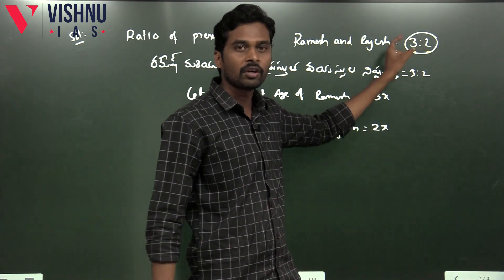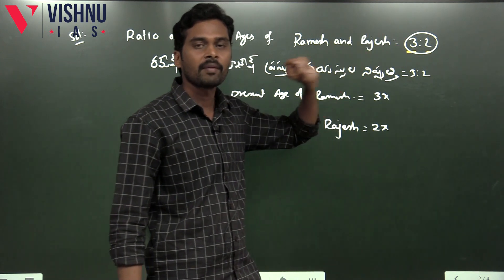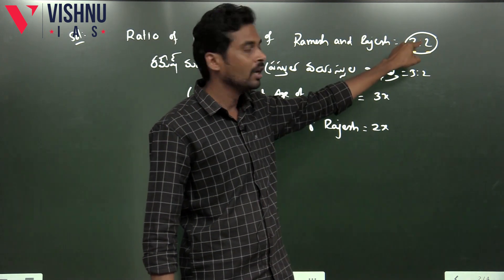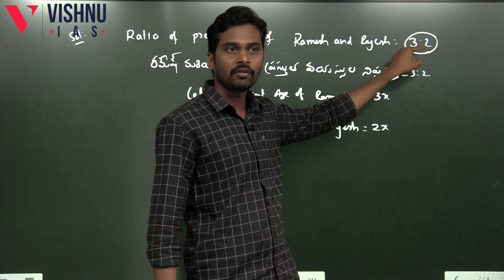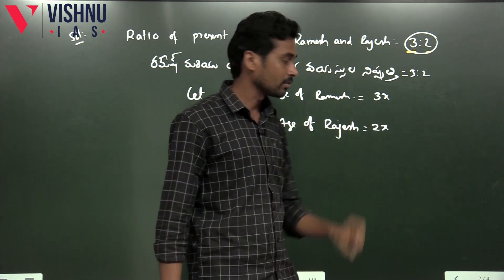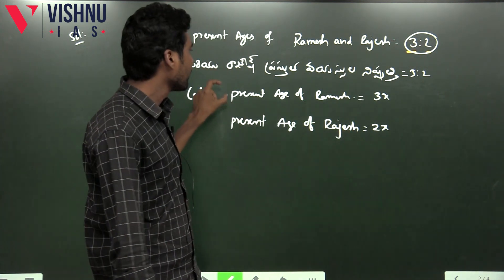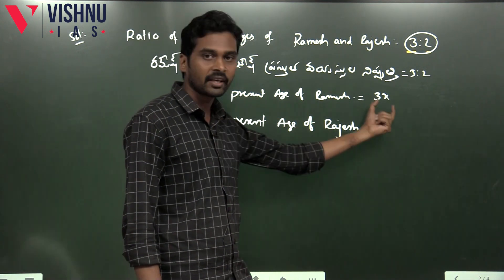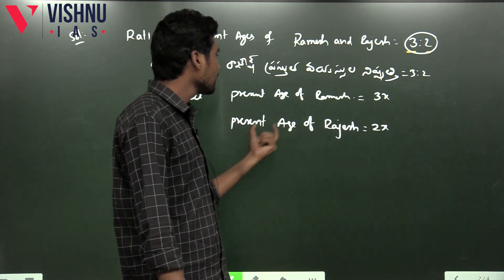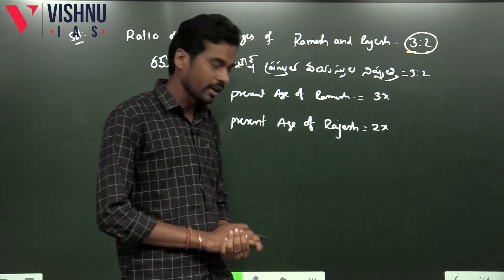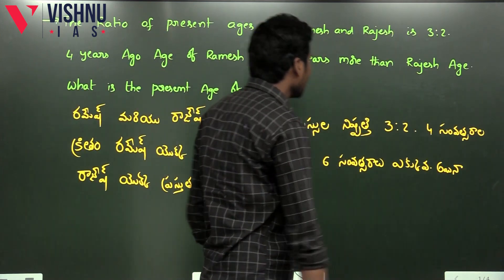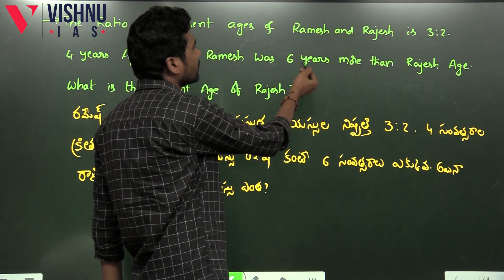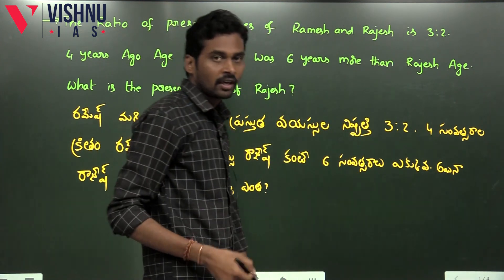So x is there, giving us 3x and 2x. Present age of Ramesh is 3x, and Rajesh's present age is 2x. If you look at this again, you can see it clearly. Four years ago, the age of Ramesh was six years more than Rajesh's age.